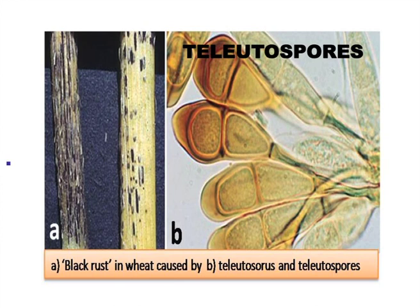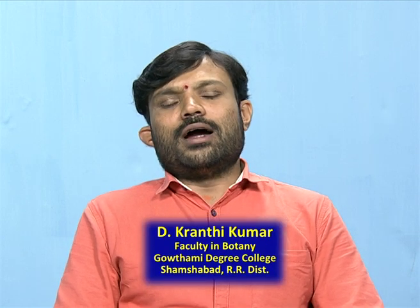The second spore type is teliospores. The same dikaryotic mycelium produces a number of teliospores in the winter season, which is why these spores are called winter spores. Urediniospores are liberated in early summer, while teliospores are formed in winter and are not resting spores.